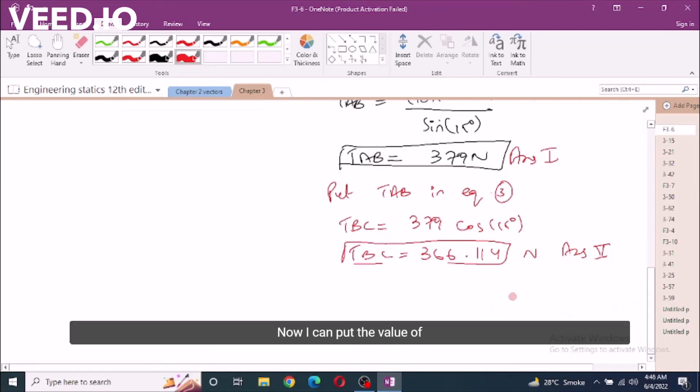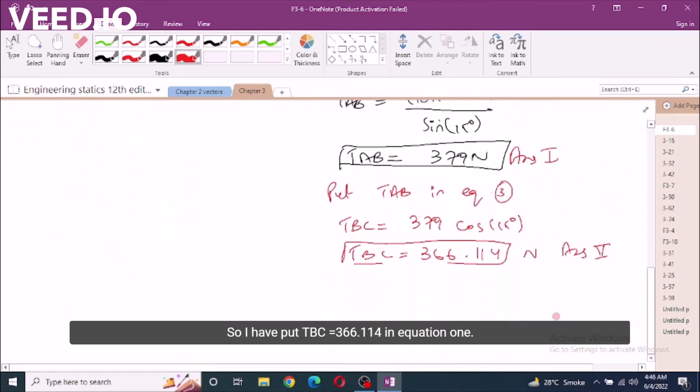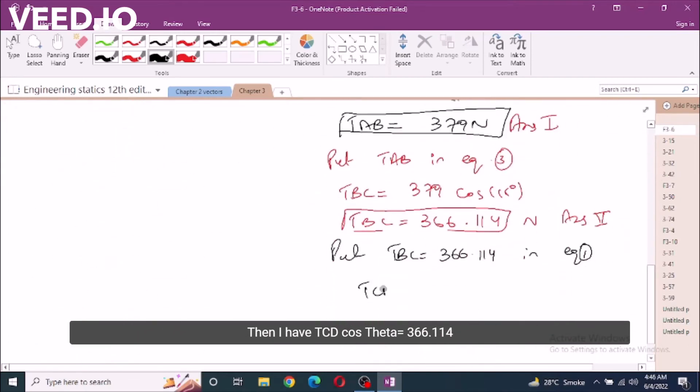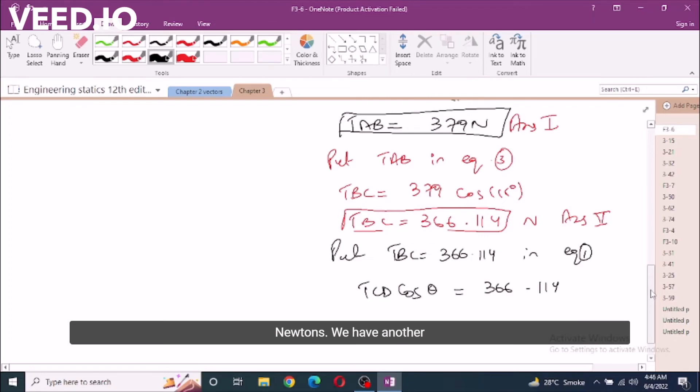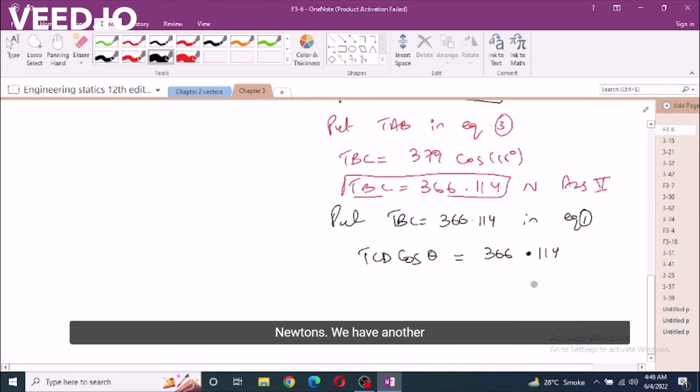Now I can put the value of TBC into equation 1. Put TBC equals 366.114 in equation 1, then I have TCD cos theta equals 366.114 newtons.